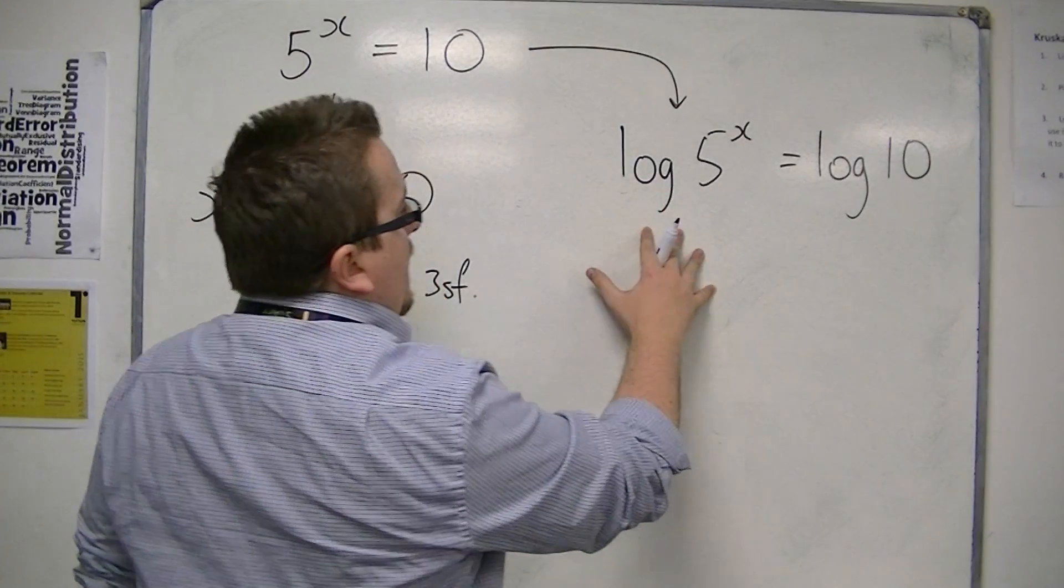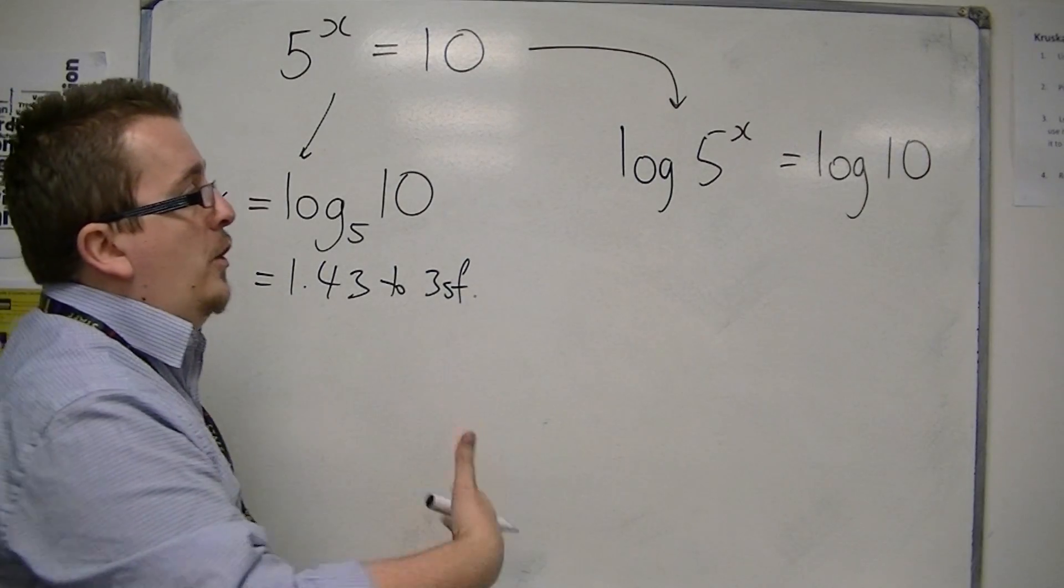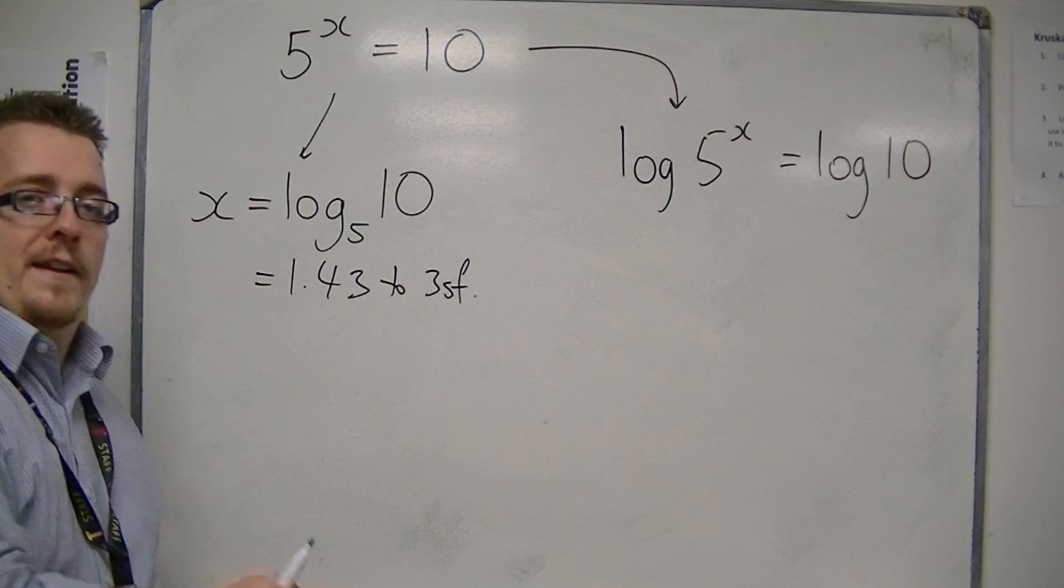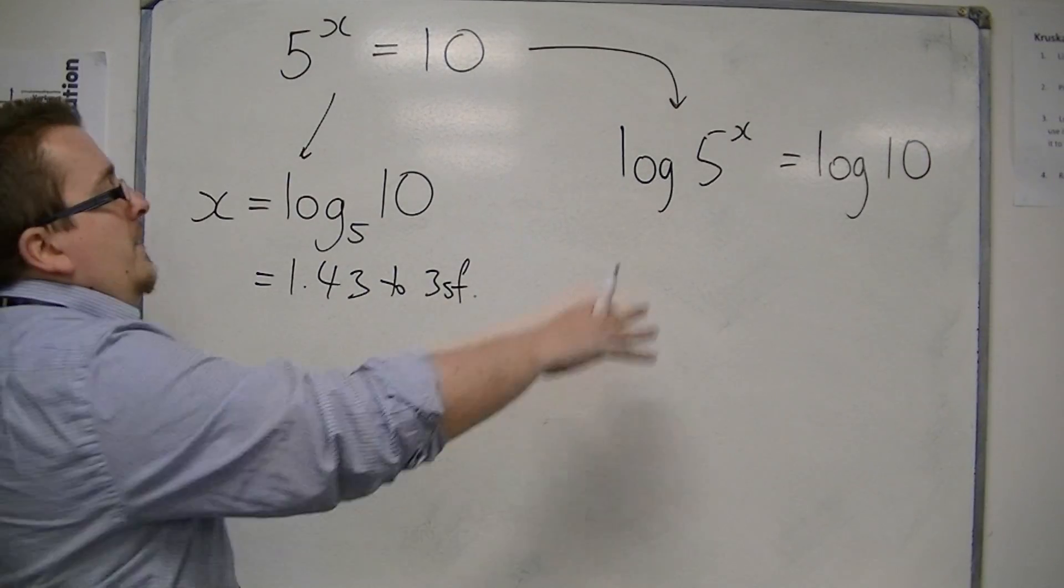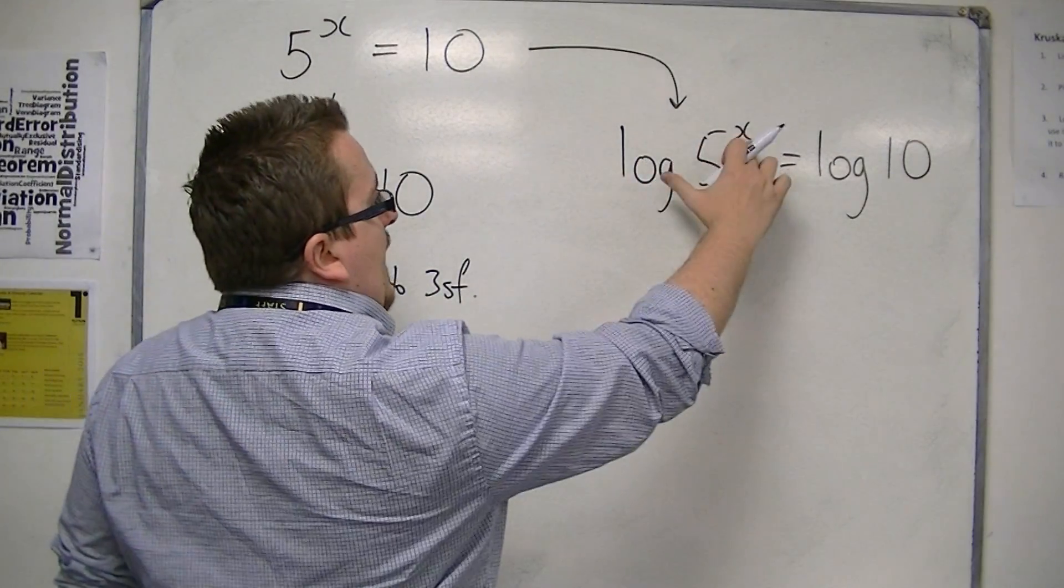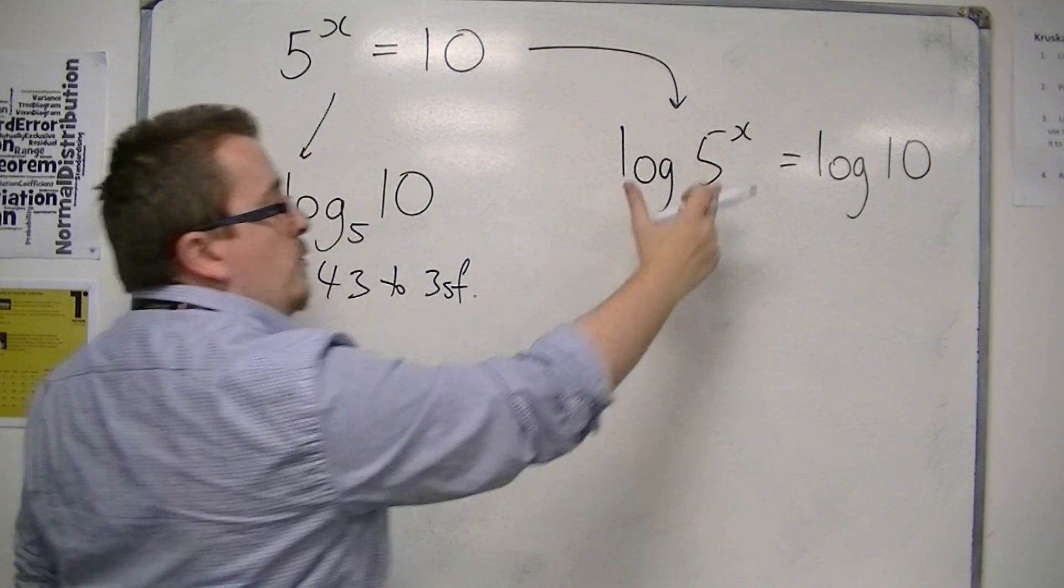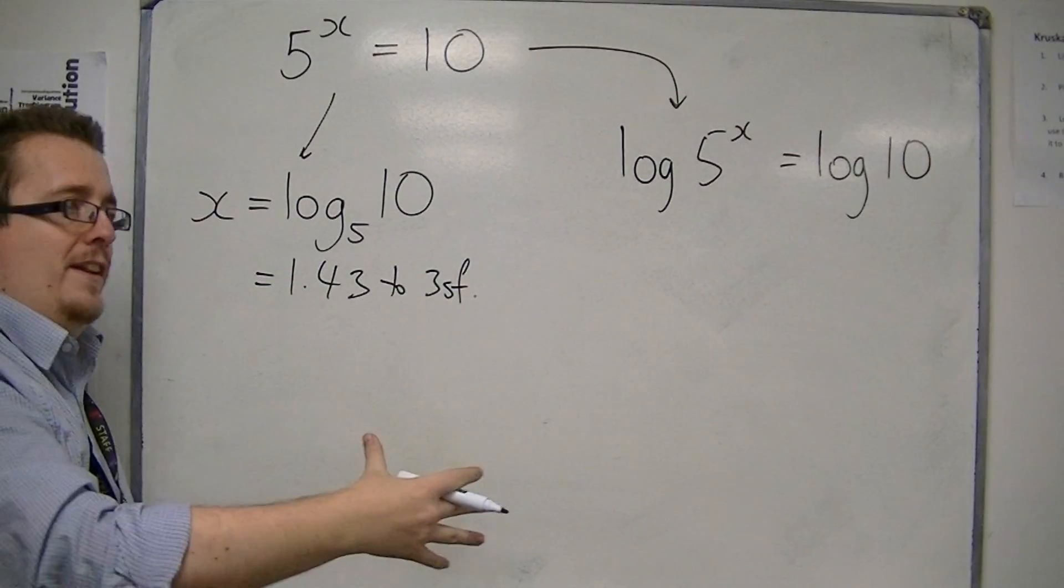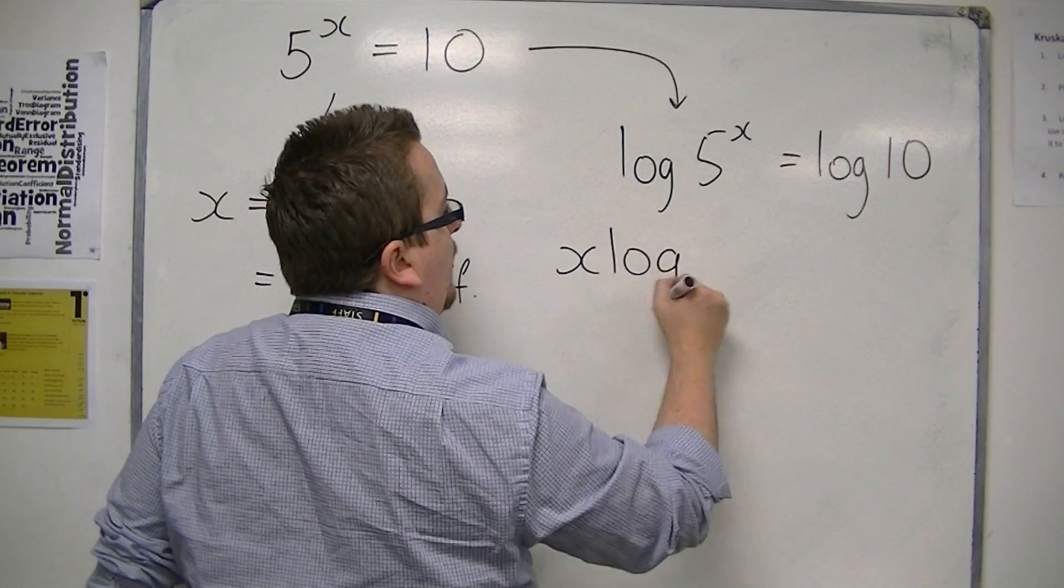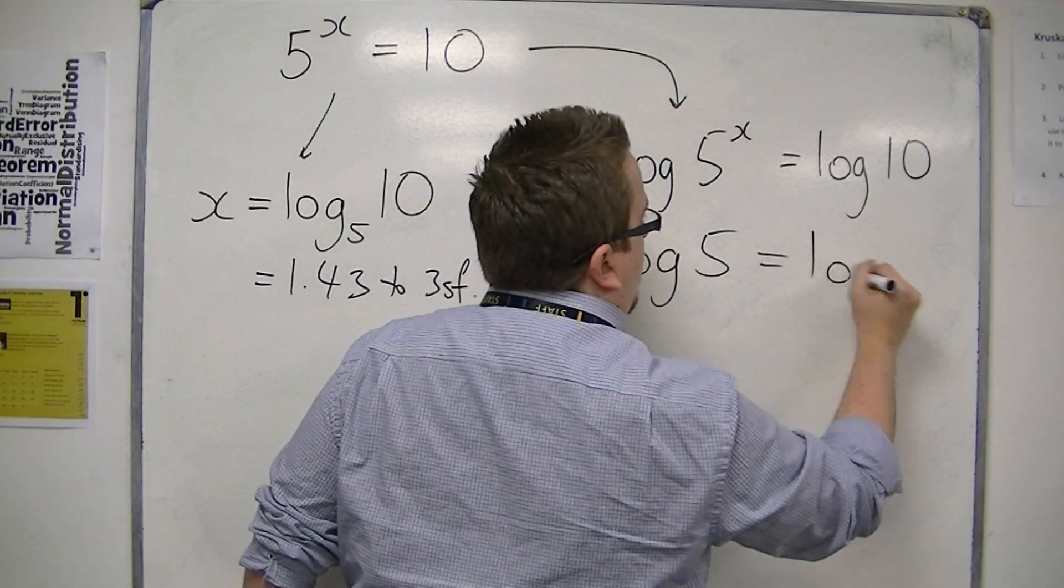Now, the left-hand side, well, first of all, what we're doing here is I'm taking a log base 10 of both sides. Because even my calculator had log base 10 on it. So with this left-hand side, we have this x as the power of the 5, which we know from the previous video, from the third log law, can be brought down to the front. And so I could write x log 5 is now equal to log 10.